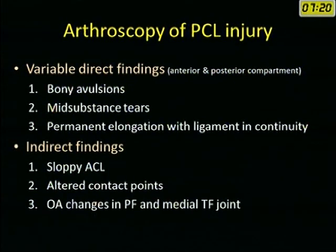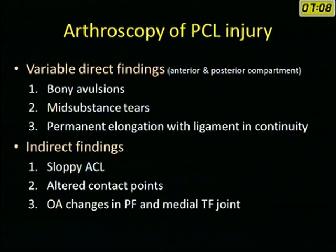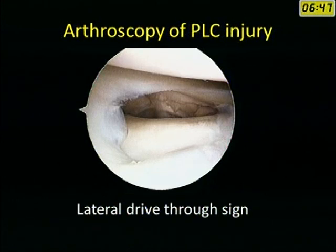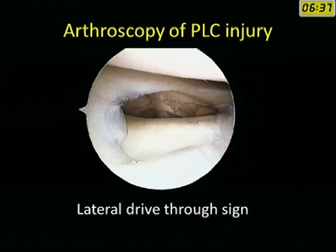If you do an arthroscopy in a PCL-injured knee, the direct findings pertaining to the PCL itself can be variable. You can see bony avulsion, mid-substance tear, or you might find an elongated but intact PCL. The indirect findings could be a sloppy ACL, altered contact points between the tibia and femur due to posterior subluxation, and osteoarthritis changes in the medial tibiofemoral joint and patellofemoral joint. The lateral drive-through sign is seen in posterolateral corner injuries, where you can pass the scope very easily into the lateral compartment.